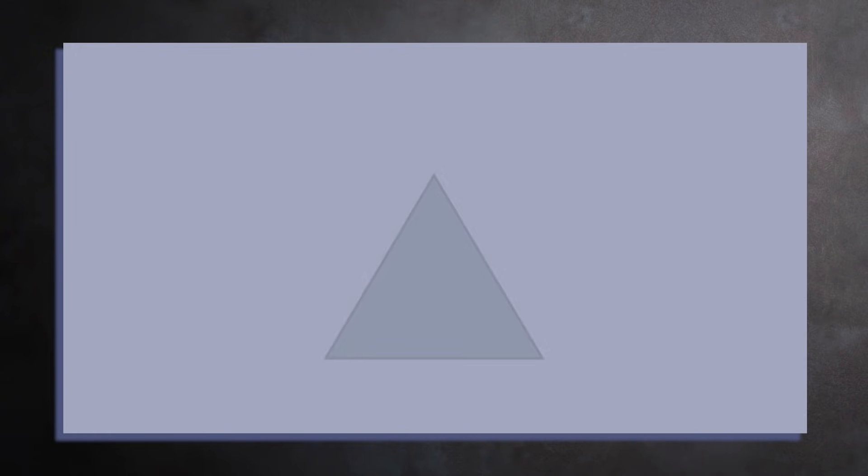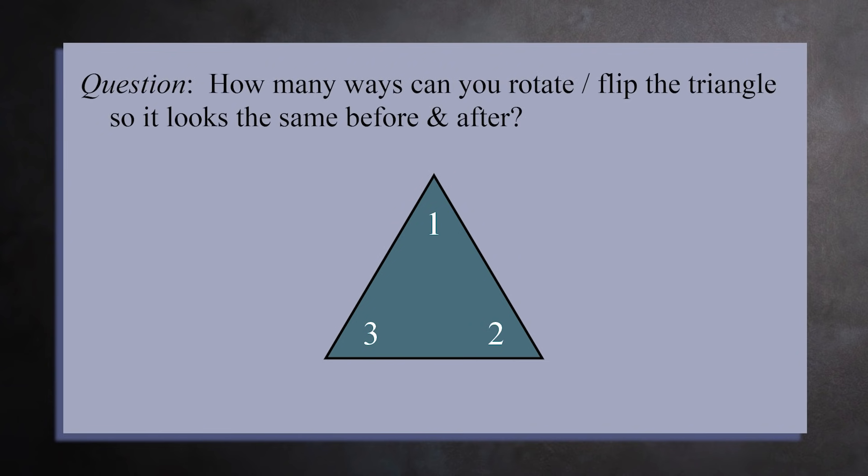For our next example, let's look at an equilateral triangle. We'll number the three corners one, two, and three. Here's a puzzle. How many different ways can you pick up the triangle, rotate and flip it around, and then set it back down so that it's in the same starting orientation? Let's count.